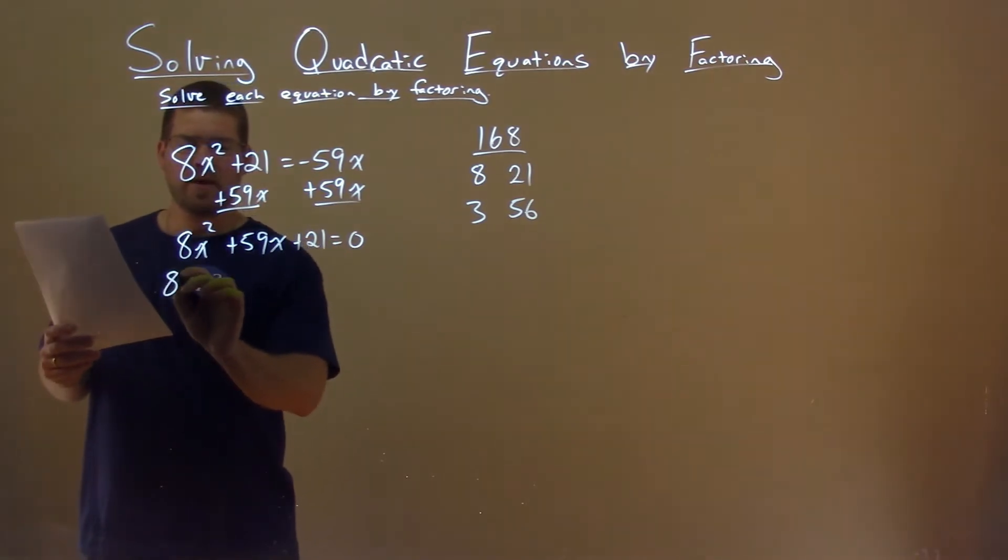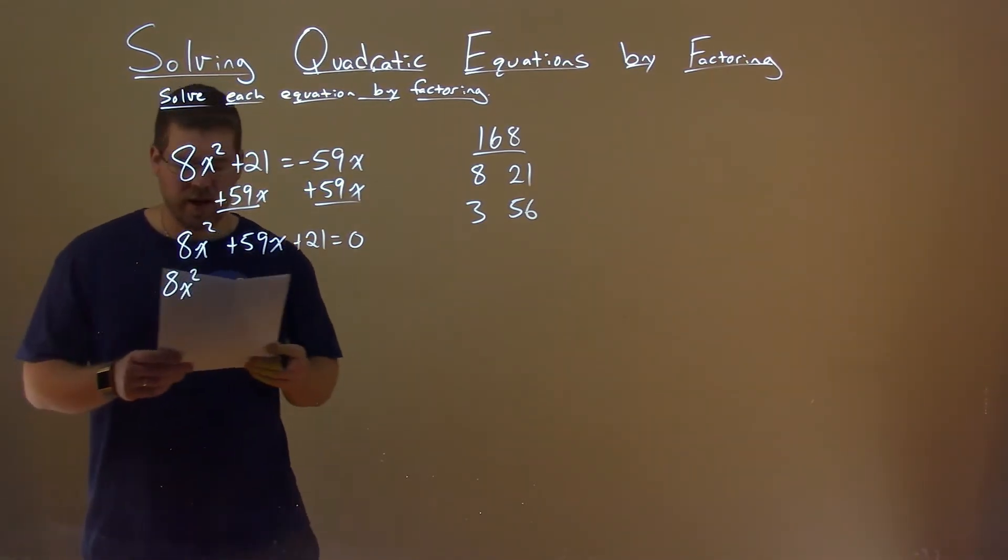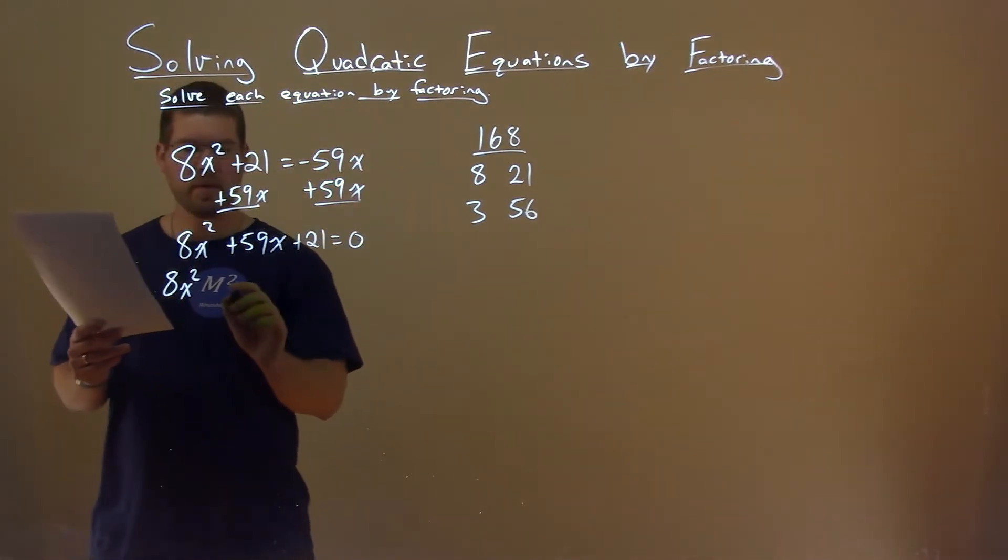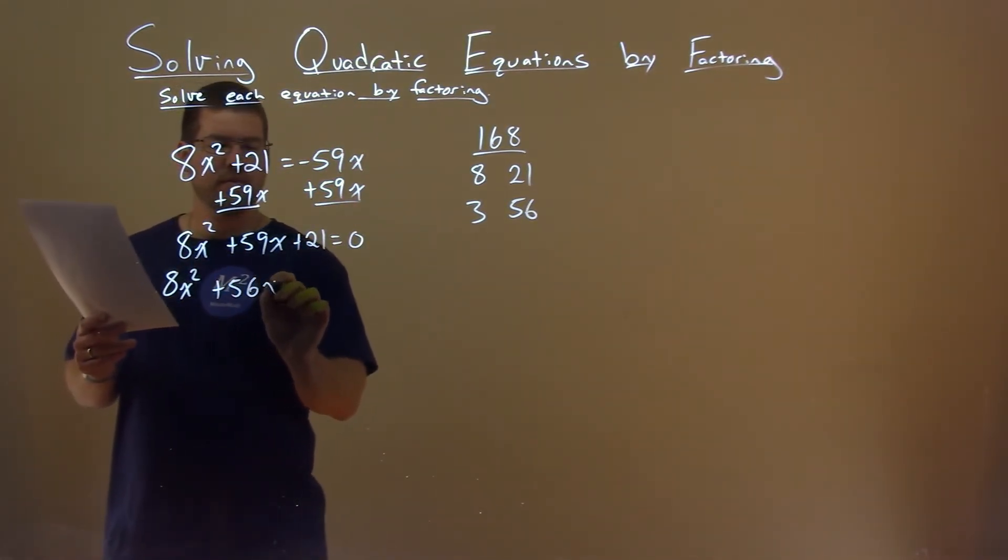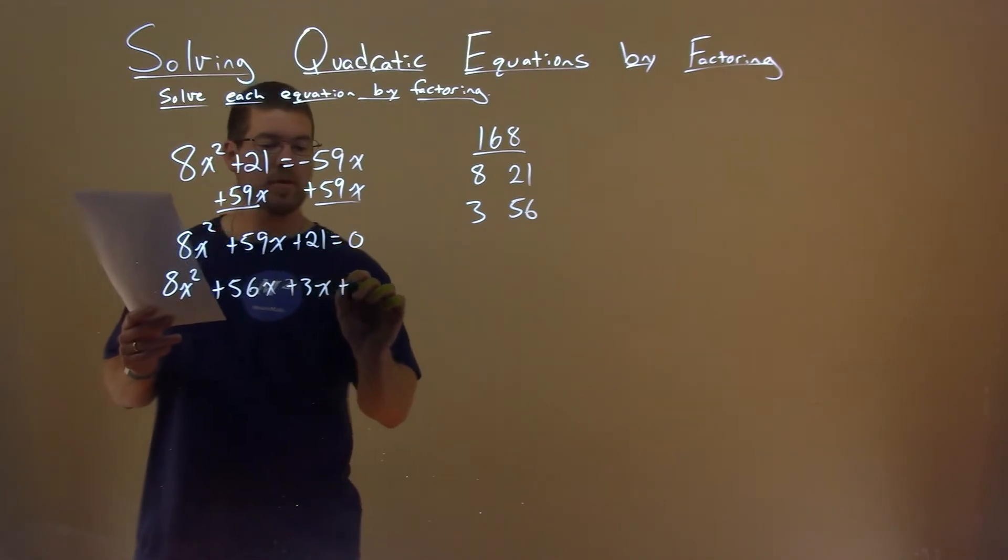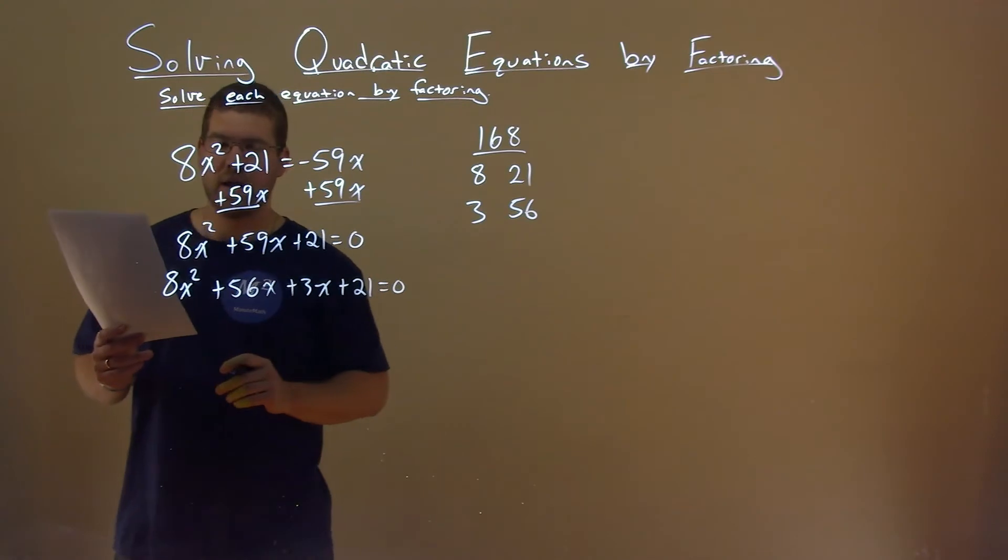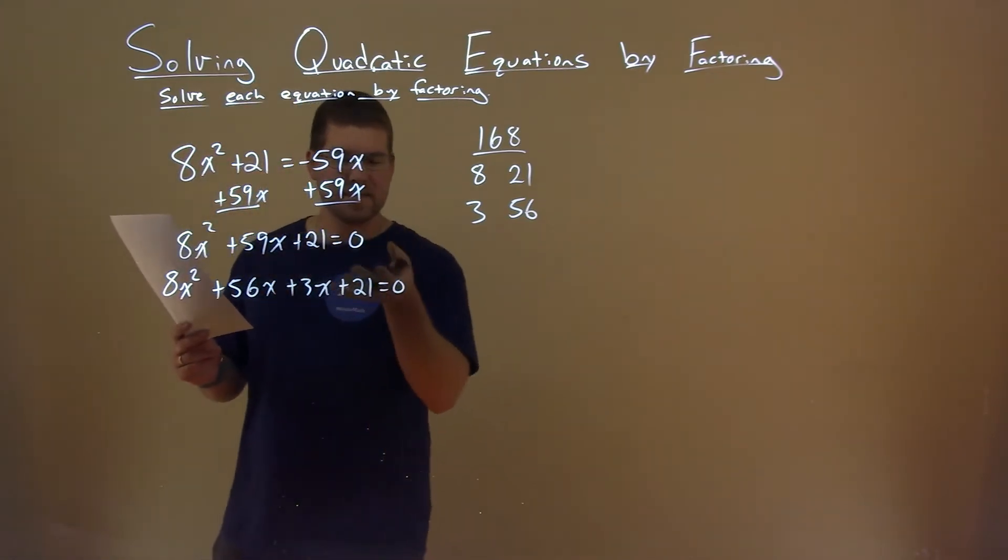So now we're going to rewrite this 8x squared, but instead of 59x, I'm going to write some combination of 3 and 56. 56x here plus 3x plus 21 equals 0. 56x plus 3x is 59x. Got it. So it's really the same equation.